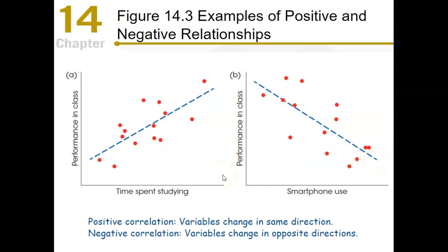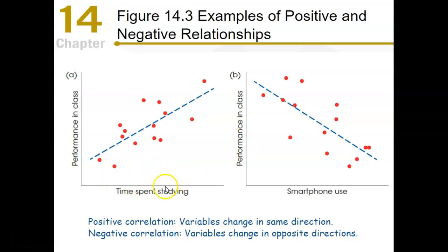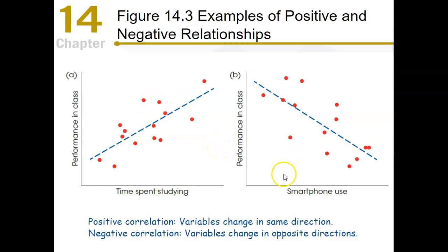These are what we call positive and negative correlations. In a positive correlation, the variables change in the same direction — as one increases, the other also increases. In a negative correlation, they move in opposite directions — as one increases, the other decreases.